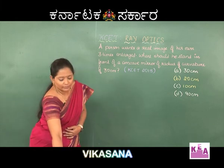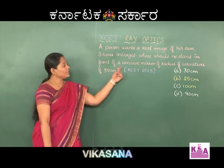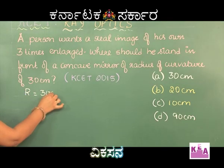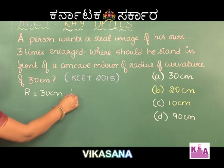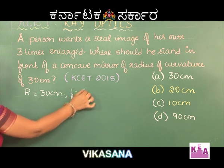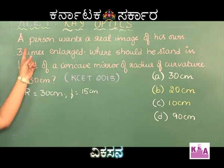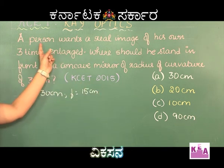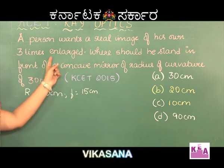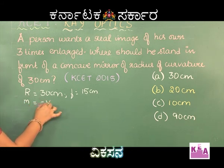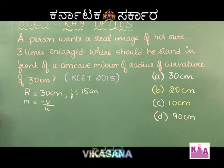Let us solve the problem. They have given us the radius of curvature as 30 centimeters. From this we can find the focal length, which is equal to 15 centimeters. Now reading the first sentence: a person wants a real image of his own three times enlarged. Here we can introduce the magnification formula, which is given as m is equal to minus v by u.